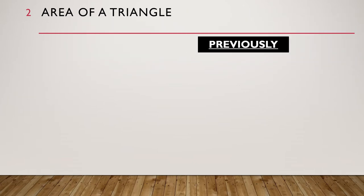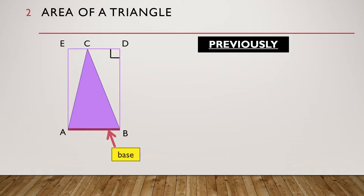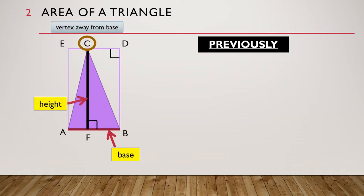Previously on area of a triangle, we had a triangle ABC as shown. We then drew its related rectangle ABDE. AB is the base of triangle ABC, and it is the common side shared by the triangle and its related rectangle. CF is the height of triangle ABC. It starts from C, which is the vertex away from the base, and goes all the way down to the base. It is perpendicular to the base, and also the other side of the related rectangle.